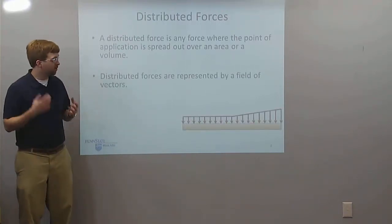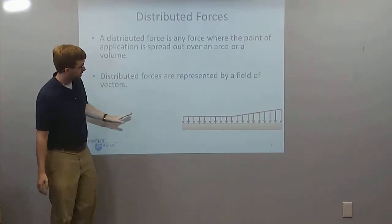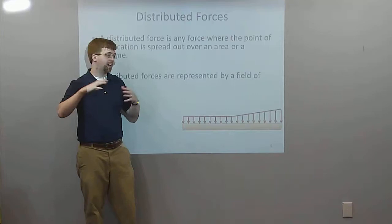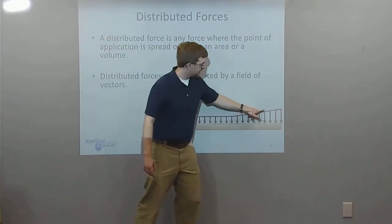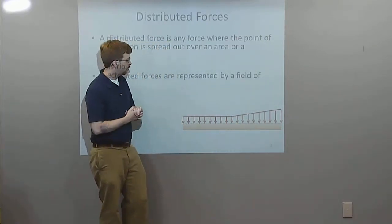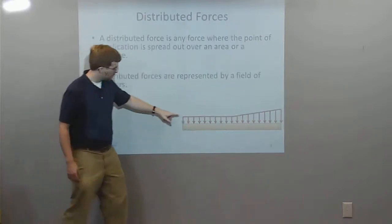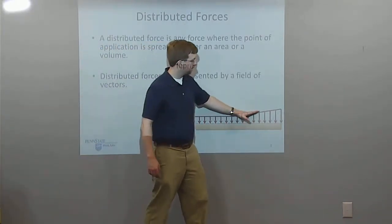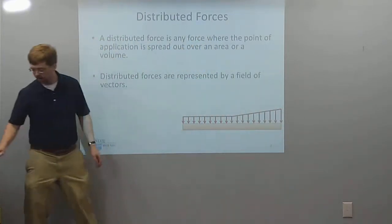This is an example of how distributed forces are represented. We've got a bunch of different vectors, and you can tell it's a distributed force because of the line connecting the force vectors on the back end. This is a field of vectors representing a distributed force. We can see a kind of consistent magnitude on one side, and as we get further along, the magnitude increases on that side.